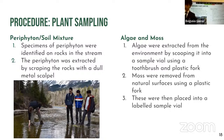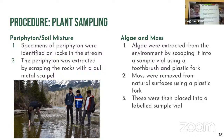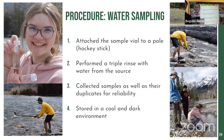We identified periphyton on rocks in the streams, collected the rocks, and removed the periphyton using a scalpel to scrape it off. For algae, we scooped it into a vial using plastic forks and toothbrushes. We removed moss from surfaces also using forks. Before collecting water samples, we labeled the vials according to location — active mine, control, or inactive mine — and whether it was running or still water.